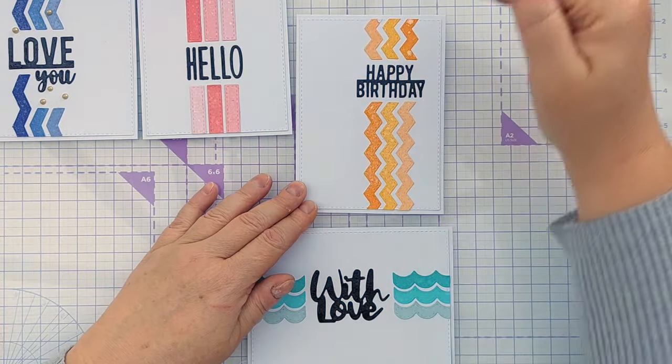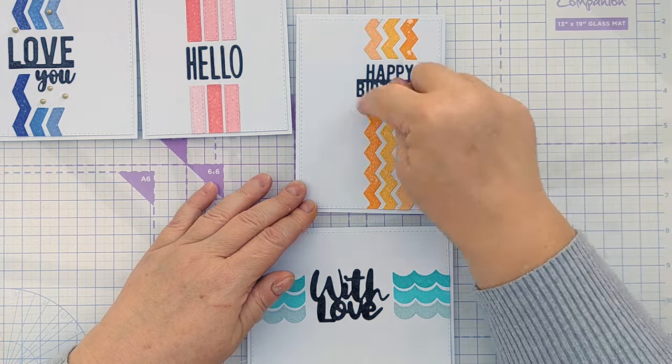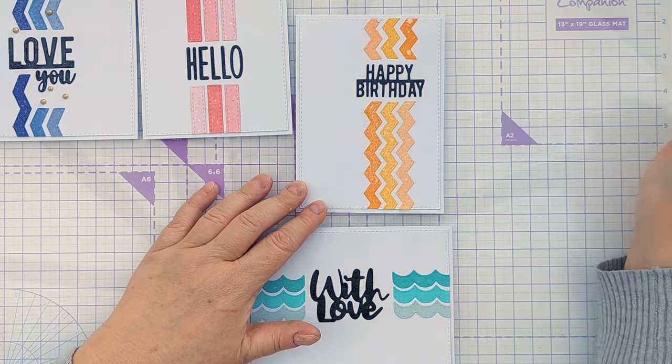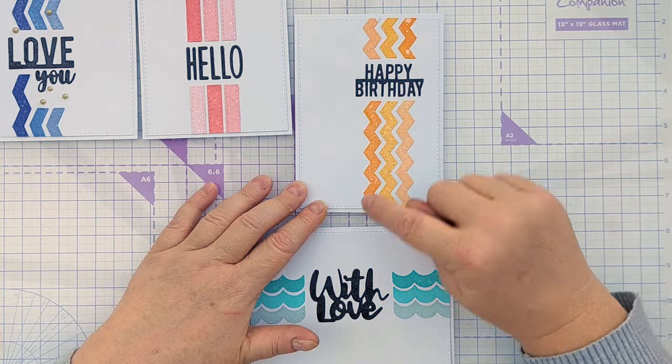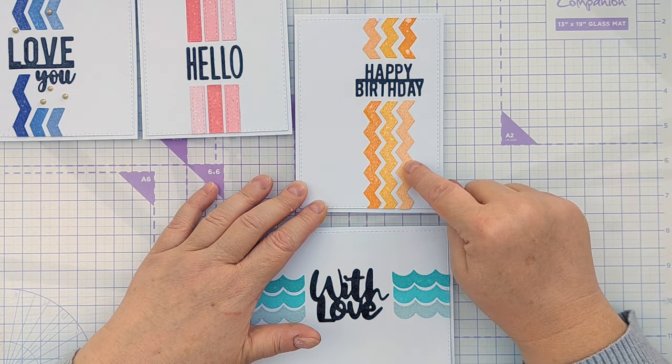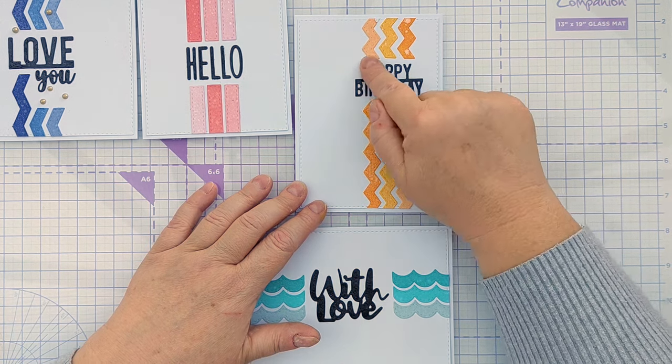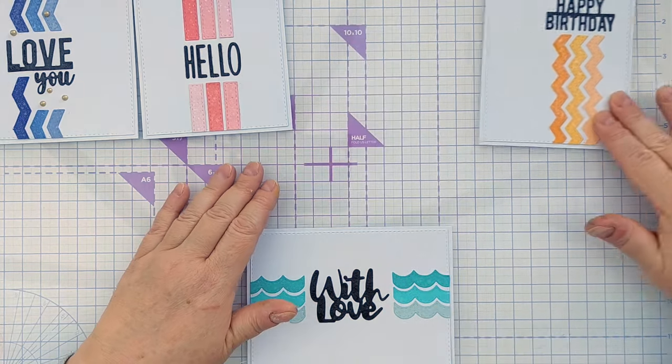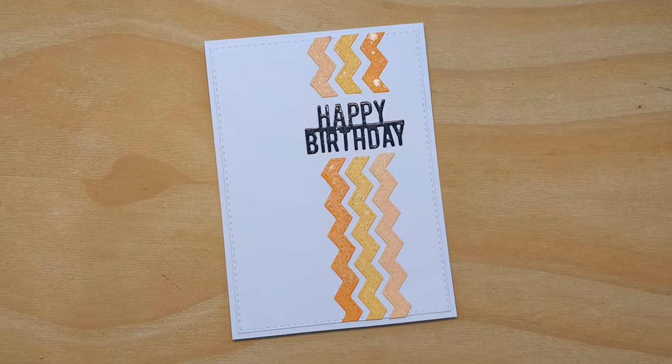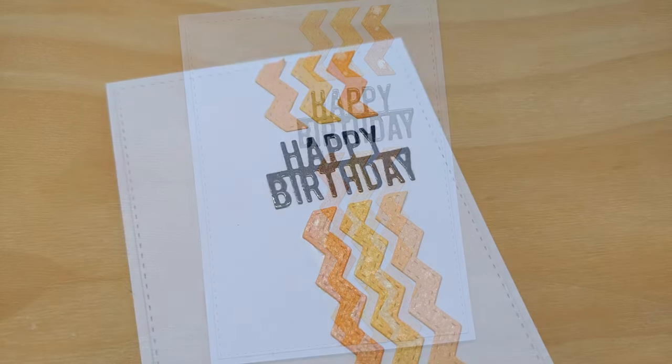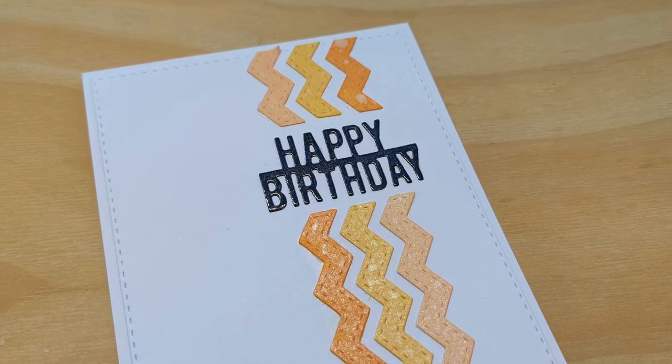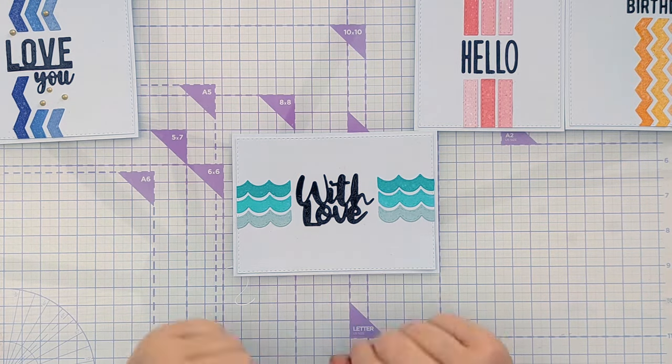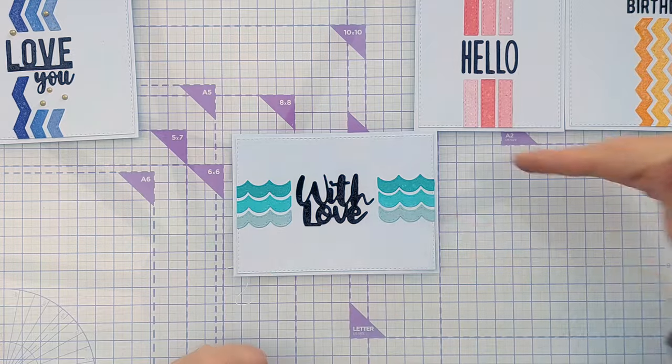With the Happy Birthday I put it in the top right hand corner, so that's on the third down and a third across. And again I shuffled the stripes around. So the bottom ones I did Spiced Marmalade, Wild Honey, Dried Marigold. And then I did the reverse up there: Dried Marigold, Wild Honey, and Spiced Marmalade. Again just for a bit of interest and variation.